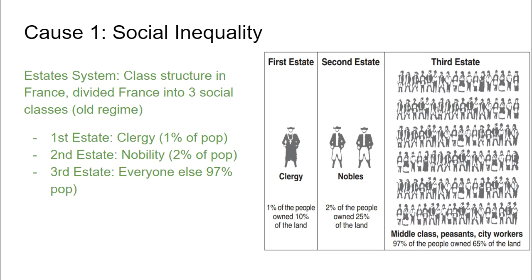The first issue that France has is major social inequalities. This is after the Enlightenment — a lot of Enlightenment thinkers talked about men having equal rights, rights to life, liberty, and property, like Locke. A lot of these ideas are spreading throughout Europe. When we look at France, France has this really old class structure known as the old regime, or the estates system. You need to be familiar with the estate system — this is the old class structure in France, and it basically divides France into three social classes. It's sometimes referred to as the old regime.